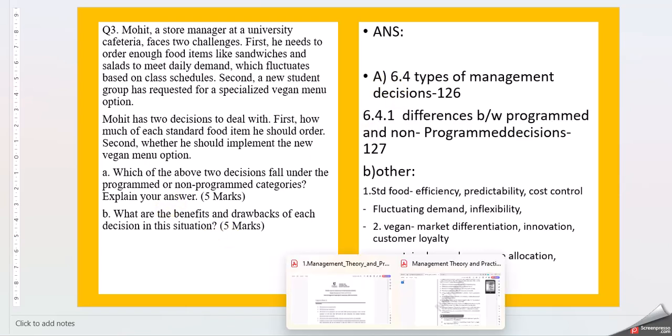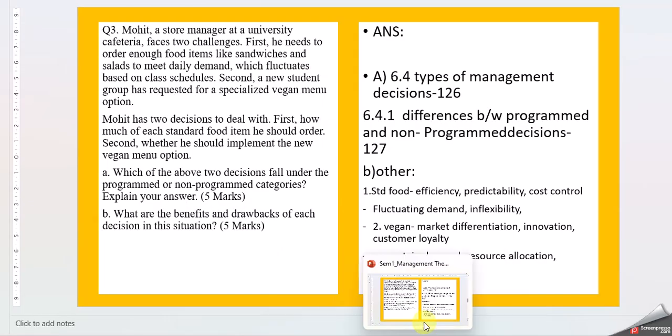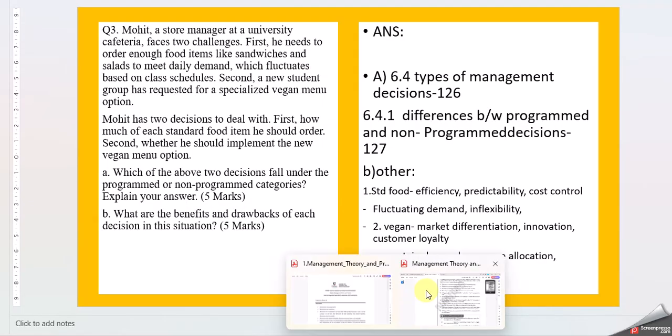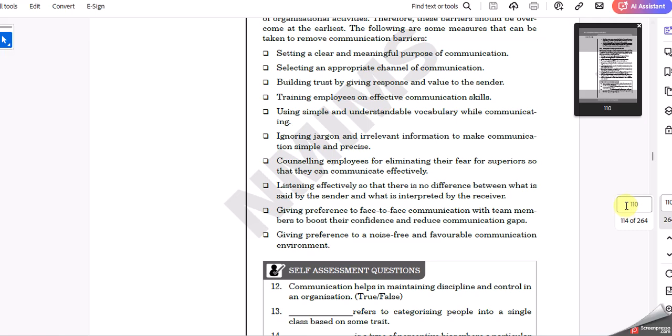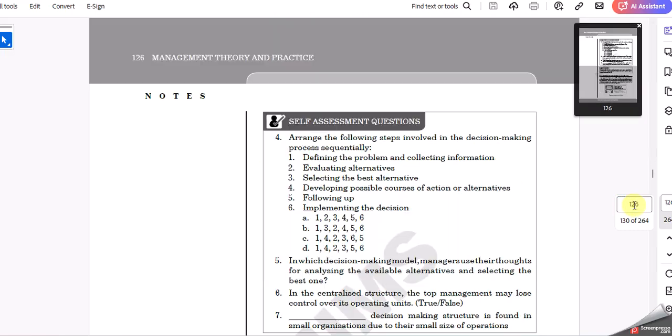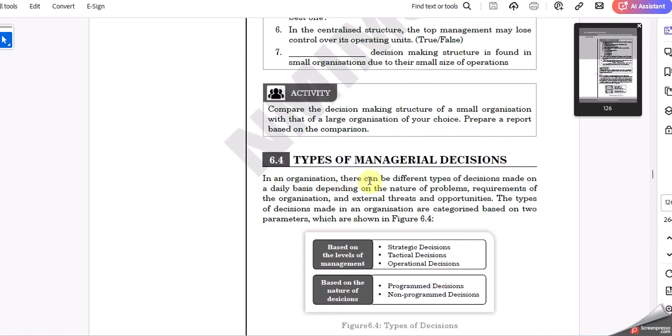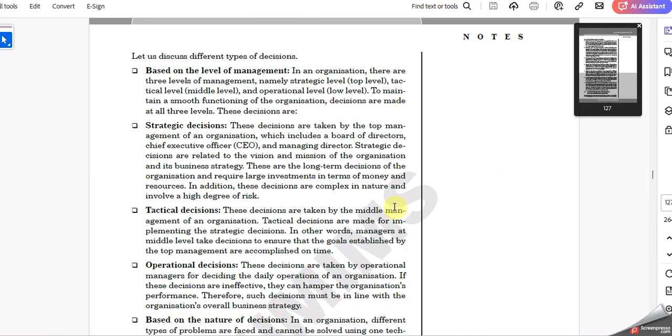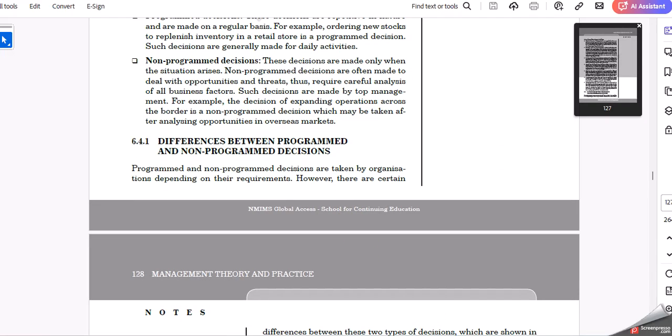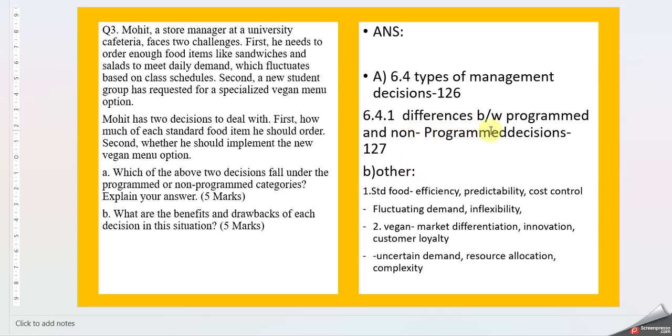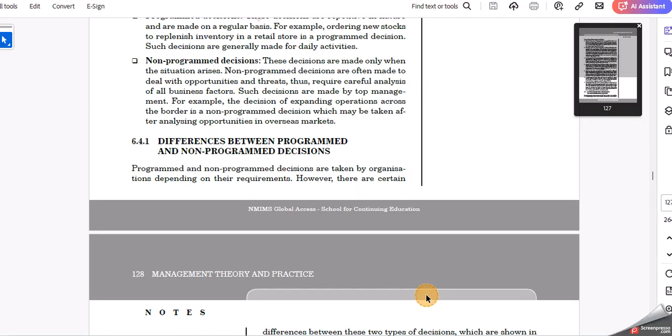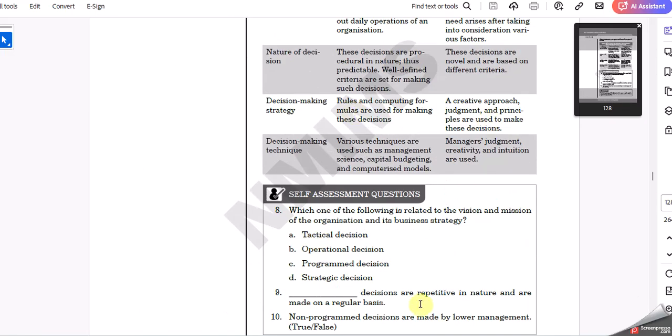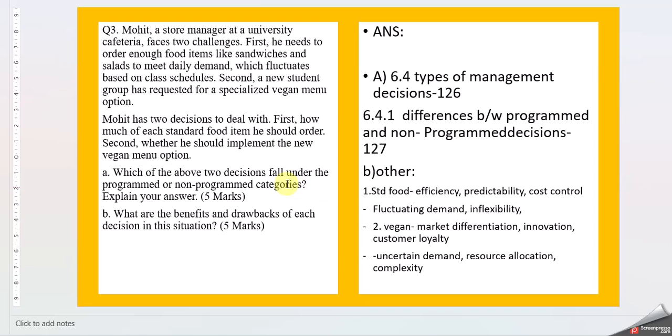For question A, refer to Chapter 6, page 126. Here you'll find types of managerial decisions based on level of management and nature of decisions. For the difference between programmed and non-programmed decisions, see page 127. This covers programmed and non-programmed differences.